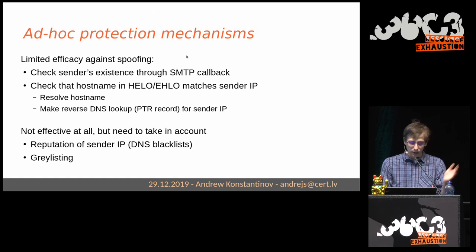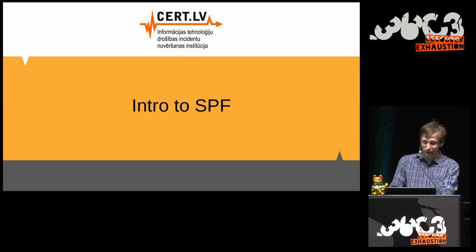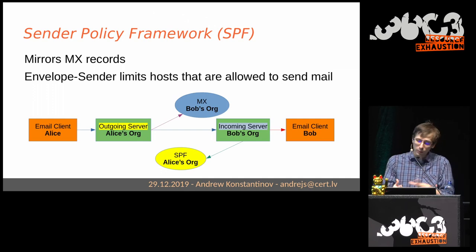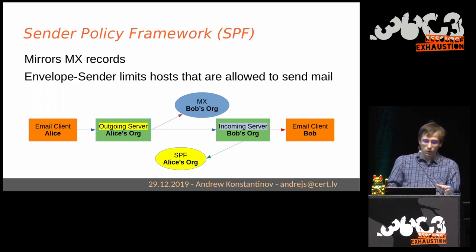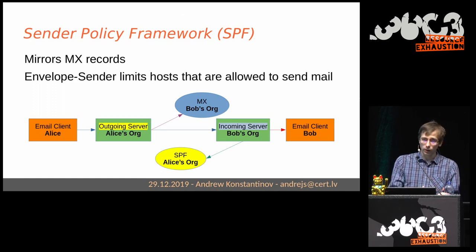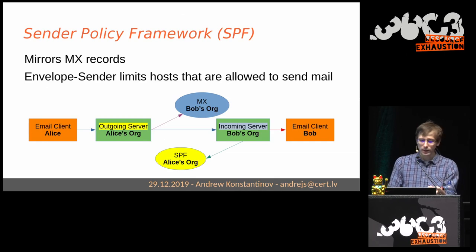SMTP by itself offers no protection. So which protocol additions can we use? One is SPF, which mirrors the MX system. MX lets Alice's server automatically find Bob's incoming server via DNS. SPF does the opposite: when Bob receives email claiming to be from Alice, he can query DNS to find what IP addresses should belong to Alice's outgoing server. The field checked by SPF is the envelope sender.